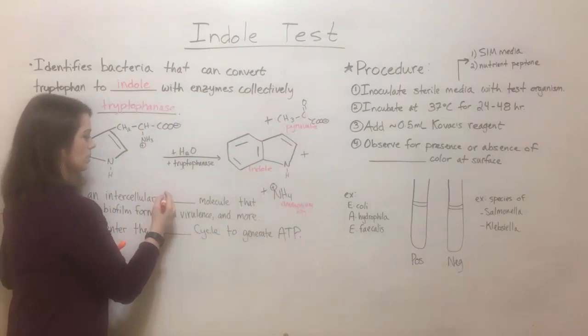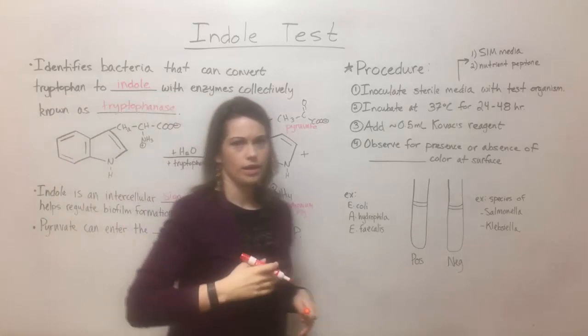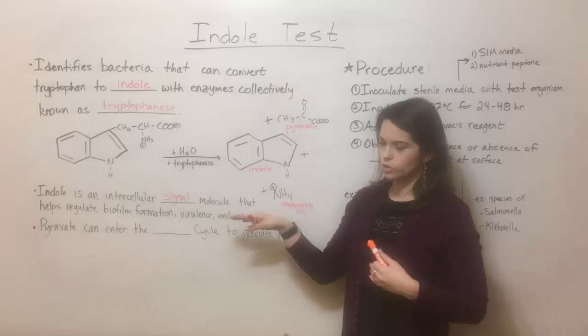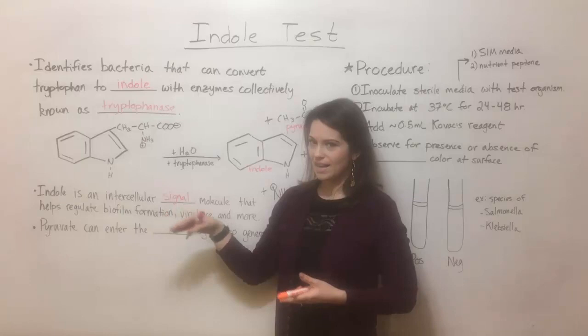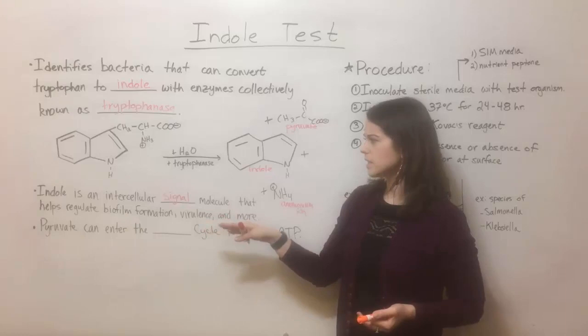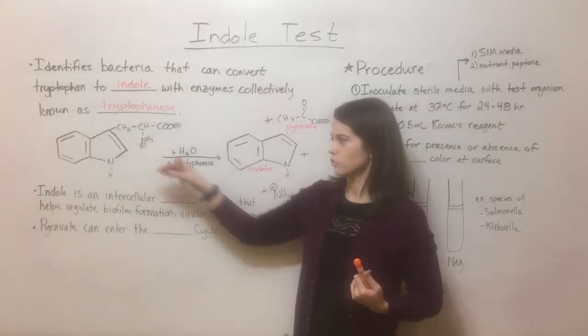It is a molecule that can be produced by a cell and then excreted in order to allow that cell to talk to other surrounding cells. It helps regulate activities like biofilm formation and also certain virulence capabilities. And so that's why a bacterial cell might need to produce indole by breaking down tryptophan.